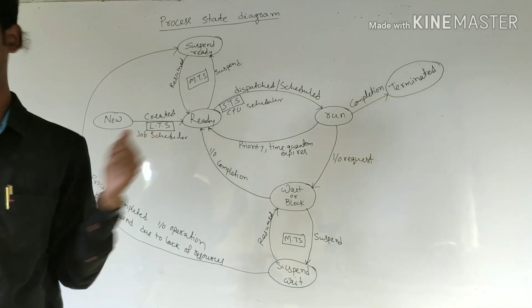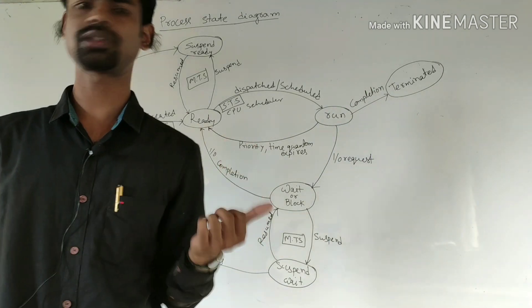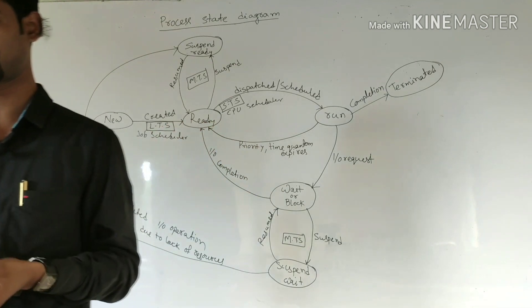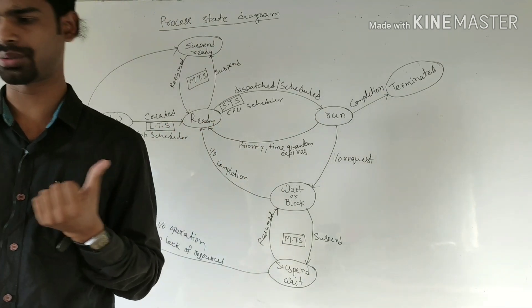Dispatcher is responsible for performing context switching. It is also responsible for loading the selected job onto the CPU.